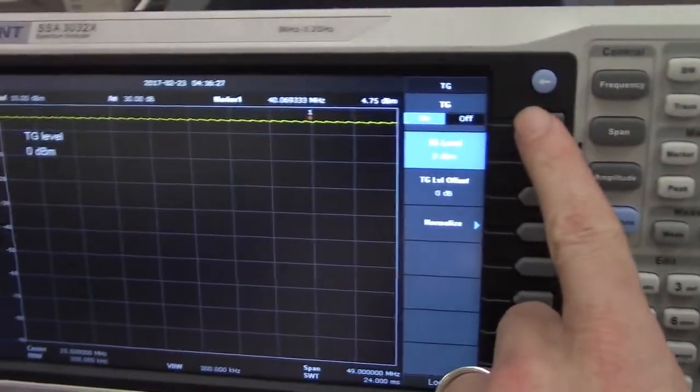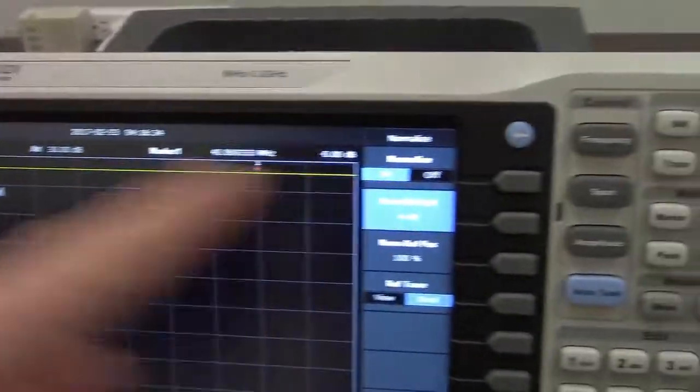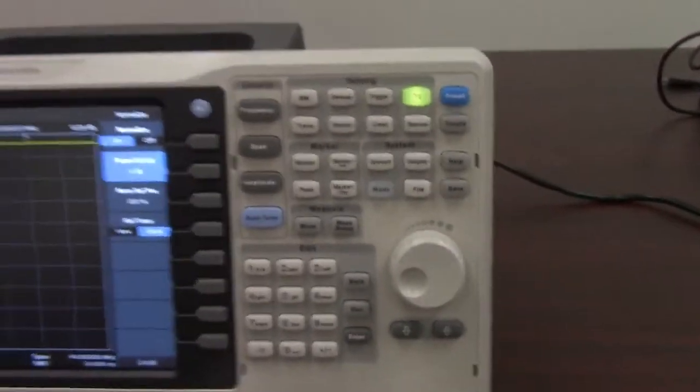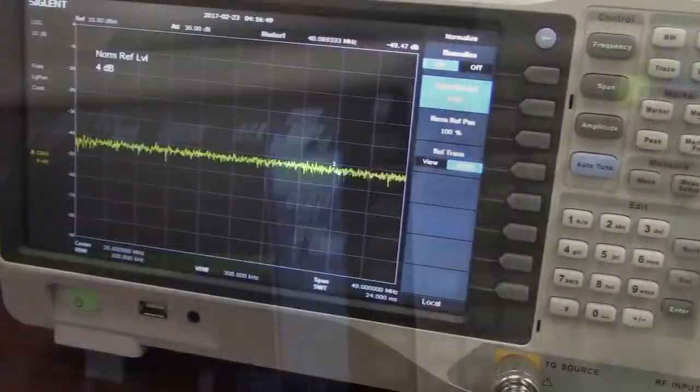Okay, now we're back. I have put the barrel adapter in and now I'm going to turn on the tracking generator. So we've got the tracking generator on. And now I'm going to press normalize and turn the normalize trace on. And now you'll see that the line has gone flat and we are at 0 dB. And now I can take out the barrel. Just take a second, try to do that one-handed.